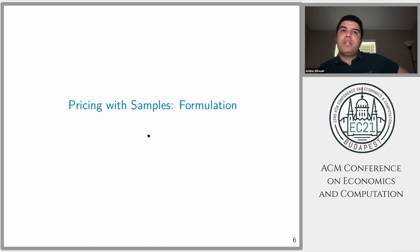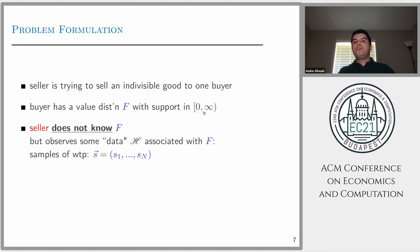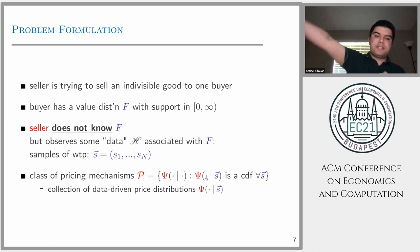Now let's formulate the problem formally. We have one seller trying to sell one indivisible good to one buyer. This buyer has some value that is coming from some distribution F with non-negative support. The main assumption is that the seller does not know the distribution of this buyer but observes some historical data.